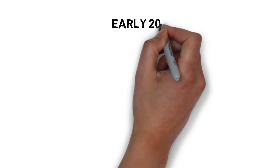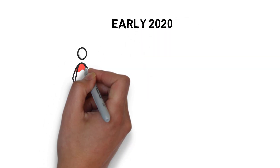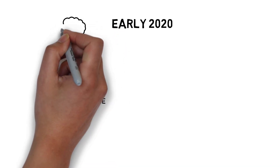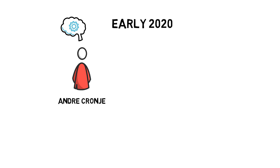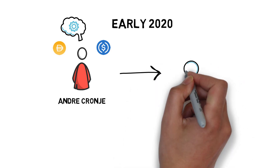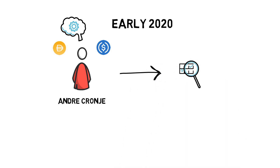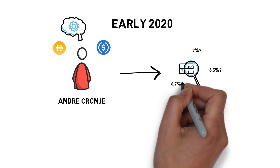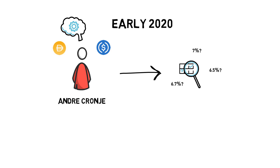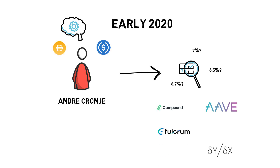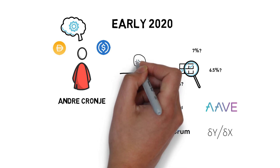In early 2020, the author of the Yearn protocol, Andre Cronje, started looking into automating his strategy for choosing the highest paying lending protocol for his stablecoins. Before the first iteration of the protocol, Andre had to wake up every day and manually check which protocol pays the best APY on that day and consider moving his funds to that protocol. There were always a few options available at the time, such as Compound, Aave, Fulcrum, or dYdX. This manual work quickly became repetitive and boring.